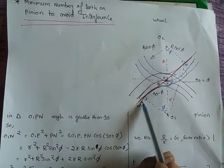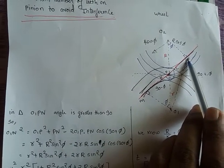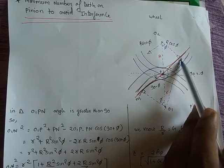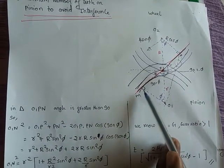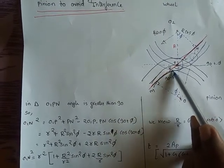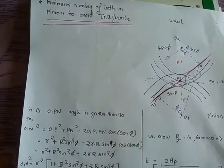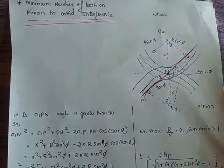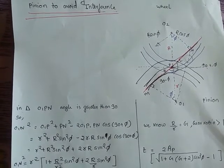This is the same diagram that we have seen in case of the interference. The only difference is that we are joining here from O1 to N. MN is the common normal passing through the pitch point. KPL is the length of path of contact that we have already seen, and we have also seen the condition of interference.